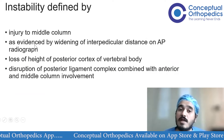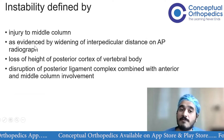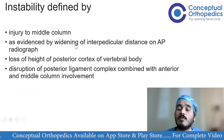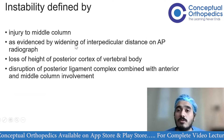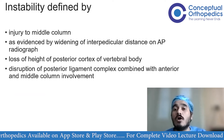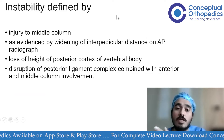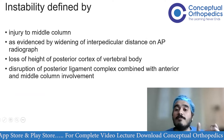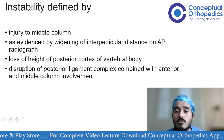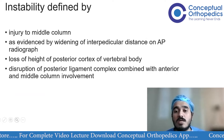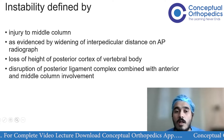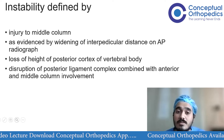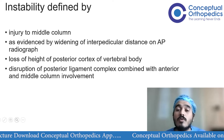Instability as per Dennis is defined when there is an injury to the middle column. If the injury involves the anterior plus middle column, or the posterior plus middle column — essentially if two out of three columns are injured — the injury is considered unstable.